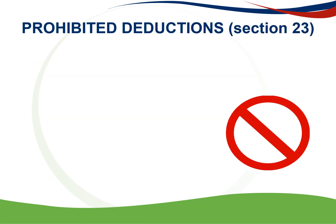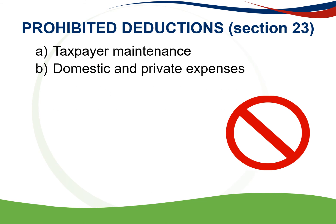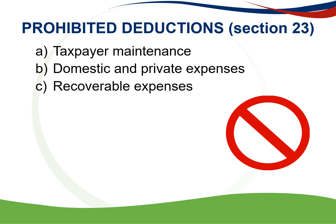In terms of Section 23, certain deductions are prohibited despite sometimes complying with all the requirements for deduction under Section 11A. First, Section 23A — taxpayer maintenance: the cost incurred in maintaining the taxpayer, their family, or the establishment is not deductible. Section 23B: any domestic or private expenses are prohibited as a deduction. Section 23C — recoverable expenditure: a loss or an expense is not deductible to the extent to which it is recoverable under a contract of insurance, a guarantee, security, or an indemnity.